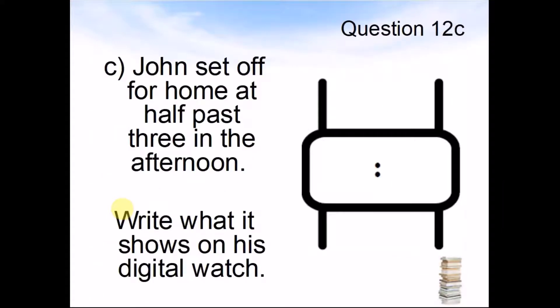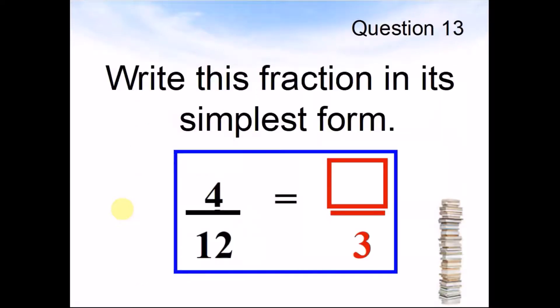Question 12c. John set off for home at half past three in the afternoon. Write what it shows on his digital watch. Pause the video and answer this question. Question 13: Write this fraction in its simplest form. 4 divided by 12 equals something divided by 3. Pause the video and work out the answer.